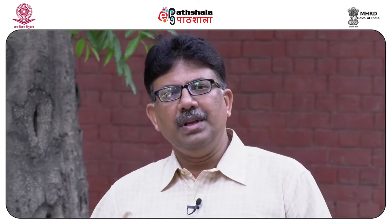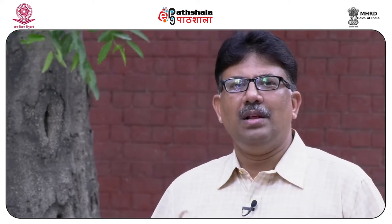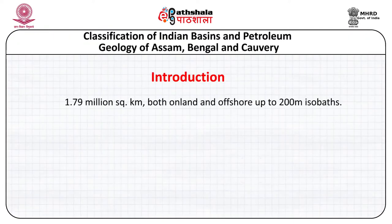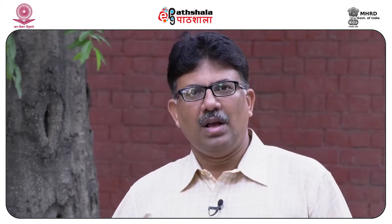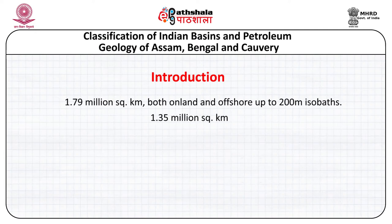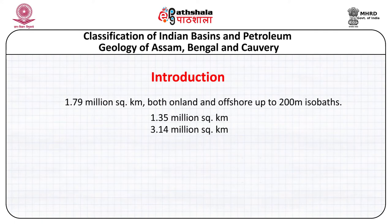In the Indian peninsula, the total aerial extent of the sedimentary basins, both on land and offshore up to 200 meter isobath, is about 1.79 million square kilometers. Beyond the 200 meter isobath in the deep water, there is another 1.35 million square kilometers, making a total of about 3.14 million square kilometers covered by sedimentary basins in the Indian cratonic part.